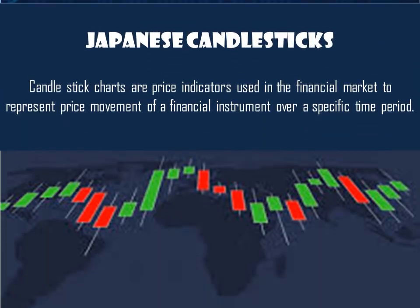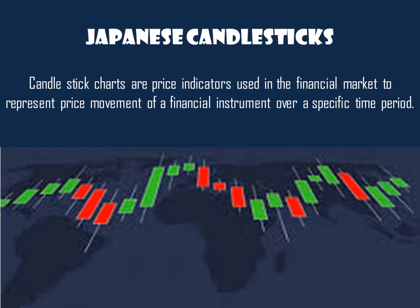Now, candlesticks — also called Japanese candlesticks — are named because they look like candles. Candlesticks are price indicators used in the financial market to represent the price movement of a financial instrument over a specific period of time. Every candlestick represents the price movement for a particular instrument over a specific period, and a combination of candlesticks makes up a chart.